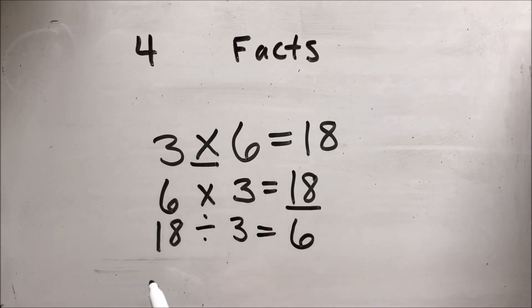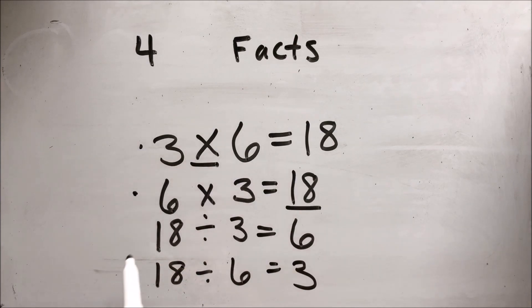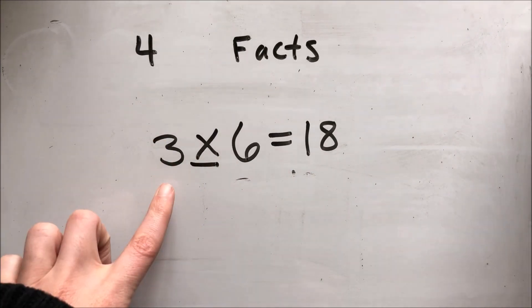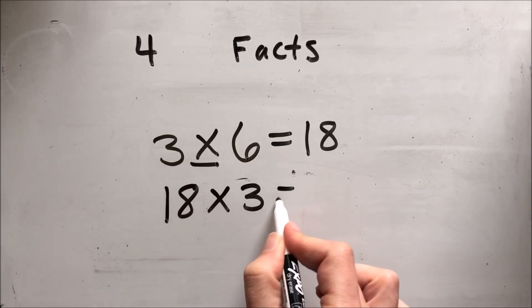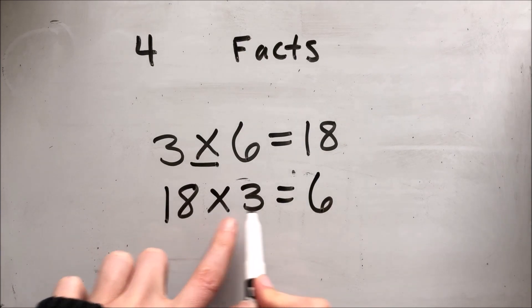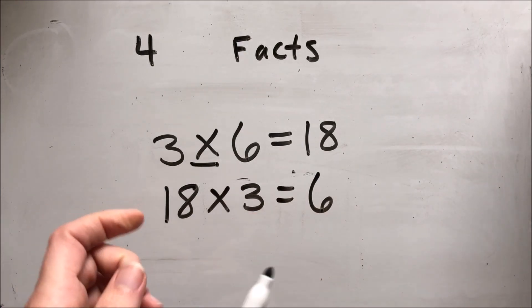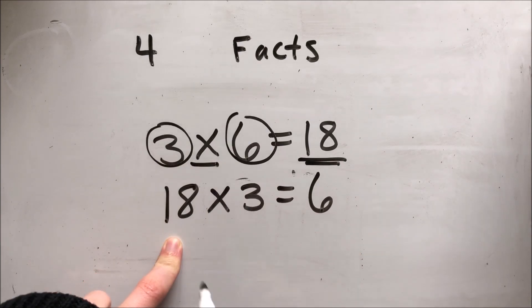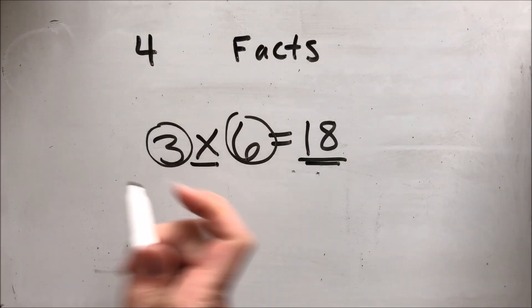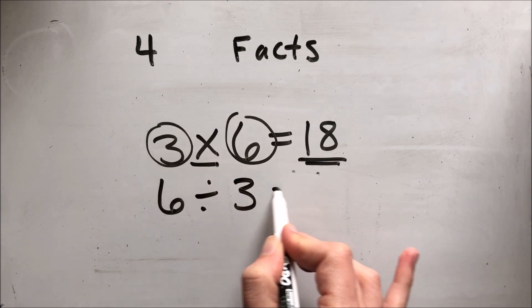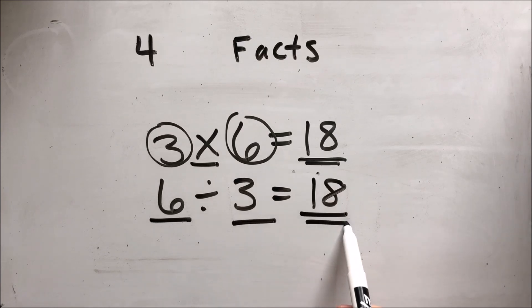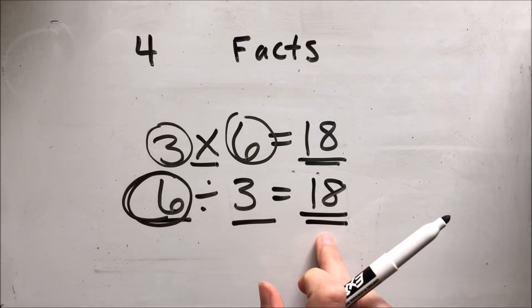Then we flip those two numbers — 18 divided by six equals three. Two multiplication facts, two division facts. They're going to try to trick you. They might give you 18 times three and say it equals six — that's wrong, because in a multiplication fact the largest number goes last. They might also give you six divided by three equals 18, which doesn't make sense because if you start with six objects you can't end up with 18 in a group. The largest number, 18, can't be the quotient.